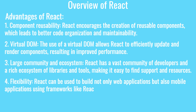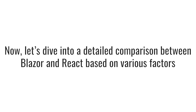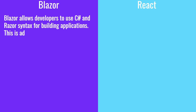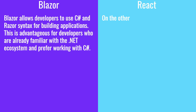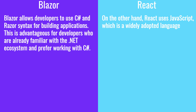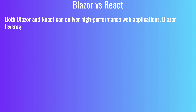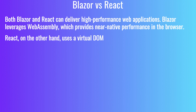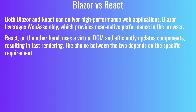Comparison between Blazor and React. Language and Syntax: Blazor allows developers to use C# and Razor syntax for building applications, which is advantageous for developers already familiar with the .NET ecosystem. React uses JavaScript, which is a widely adopted language in web development. Performance: Both Blazor and React can deliver high-performance web applications. Blazor leverages WebAssembly for near-native performance in the browser, while React uses a virtual DOM and efficiently updates components, resulting in fast rendering. The choice between the two depends on the specific requirements of your application.